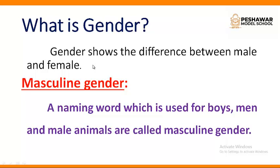The first is masculine gender. A naming word — and a naming word is a noun — which is used for boys, men, and male animals is called masculine gender. Masculine kya hai? Jo lardke, aadmi, ya male animals hain, unko hum masculine kehte hain.